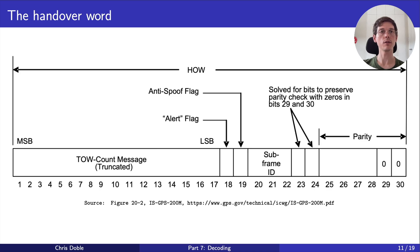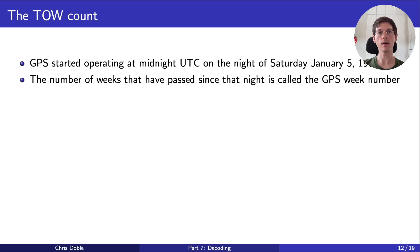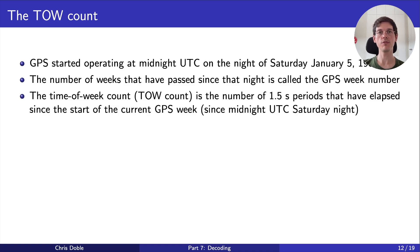GPS started operating at midnight UTC on the night of Saturday, January 5th, 1980. The number of weeks that have passed since that night is called the GPS week number. The time of week count, or TOW count, referenced in this parameter name, is the number of 1.5 second periods that have elapsed since the start of the current GPS week, that is, since midnight UTC of the most recent Saturday night.